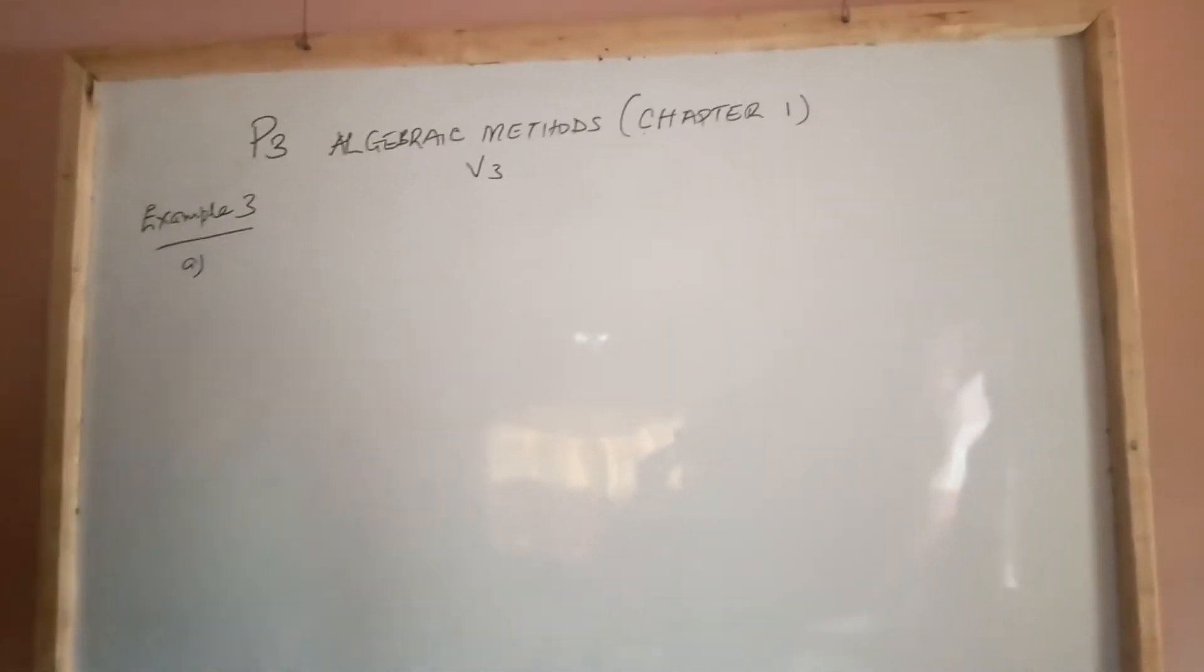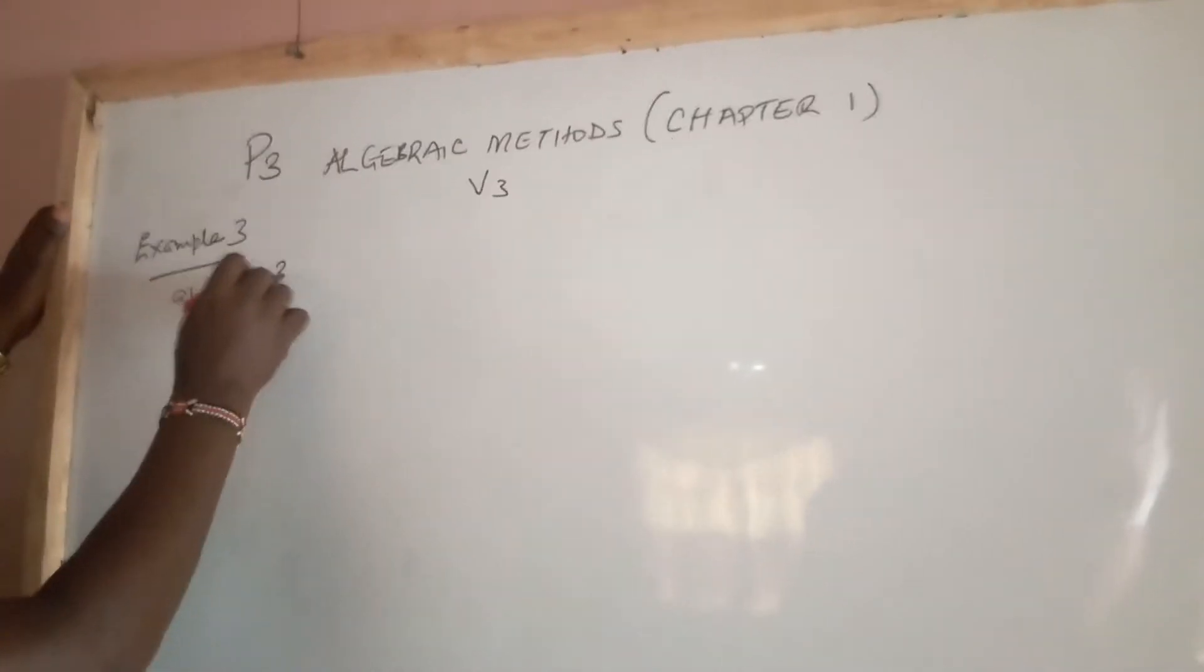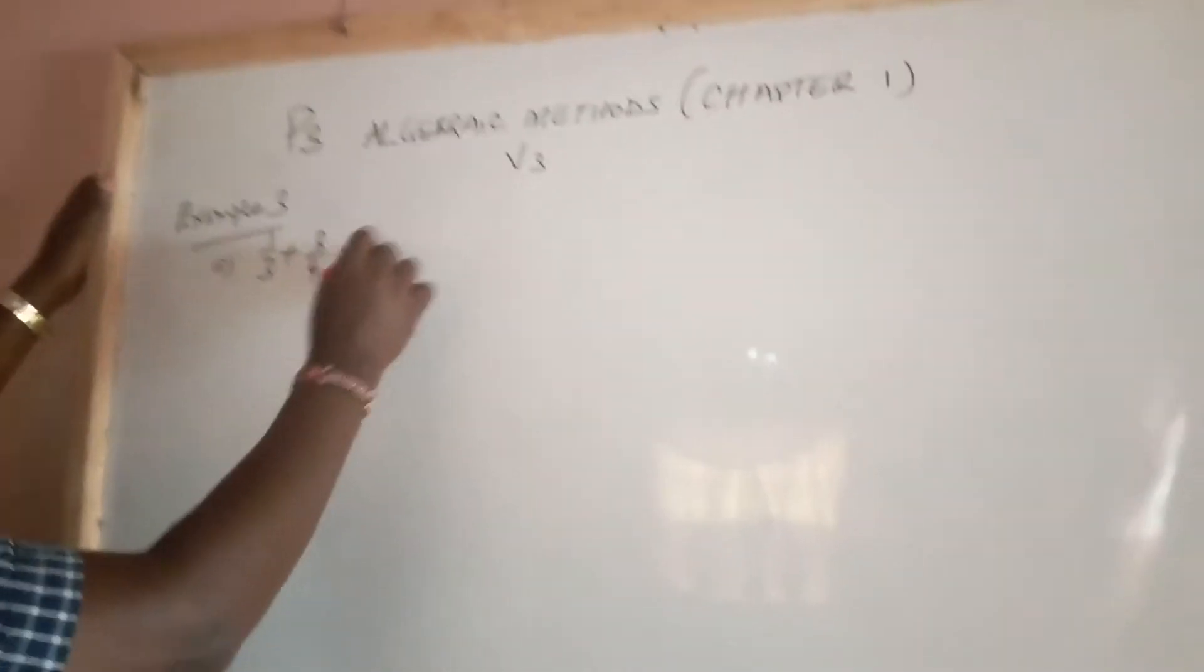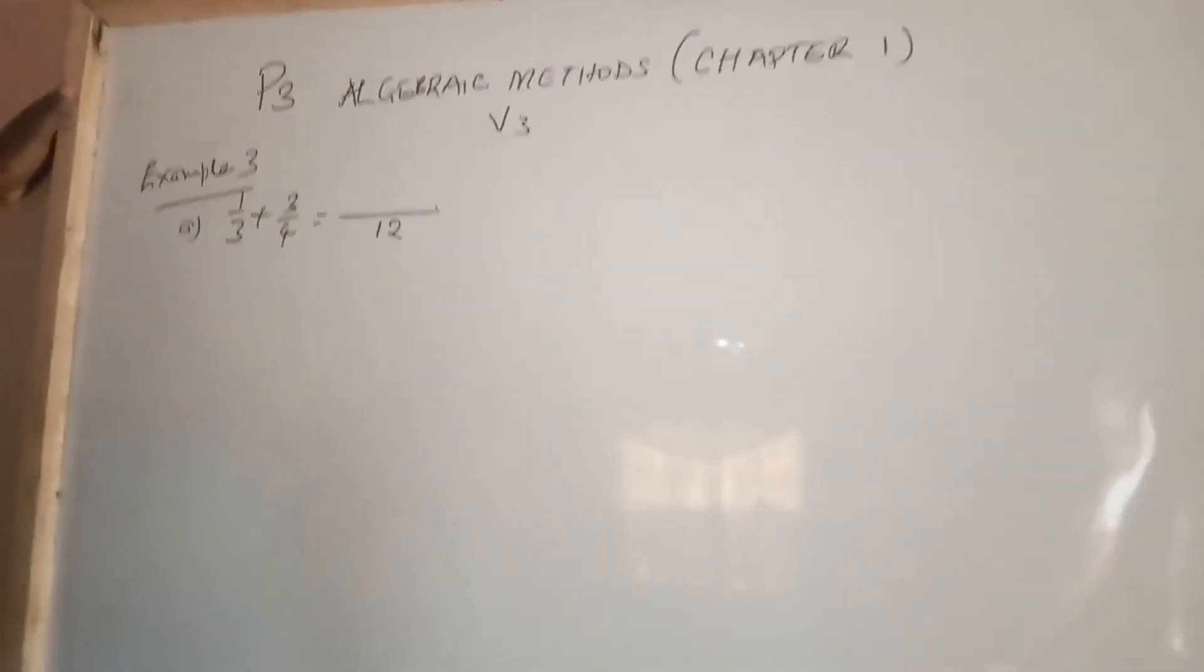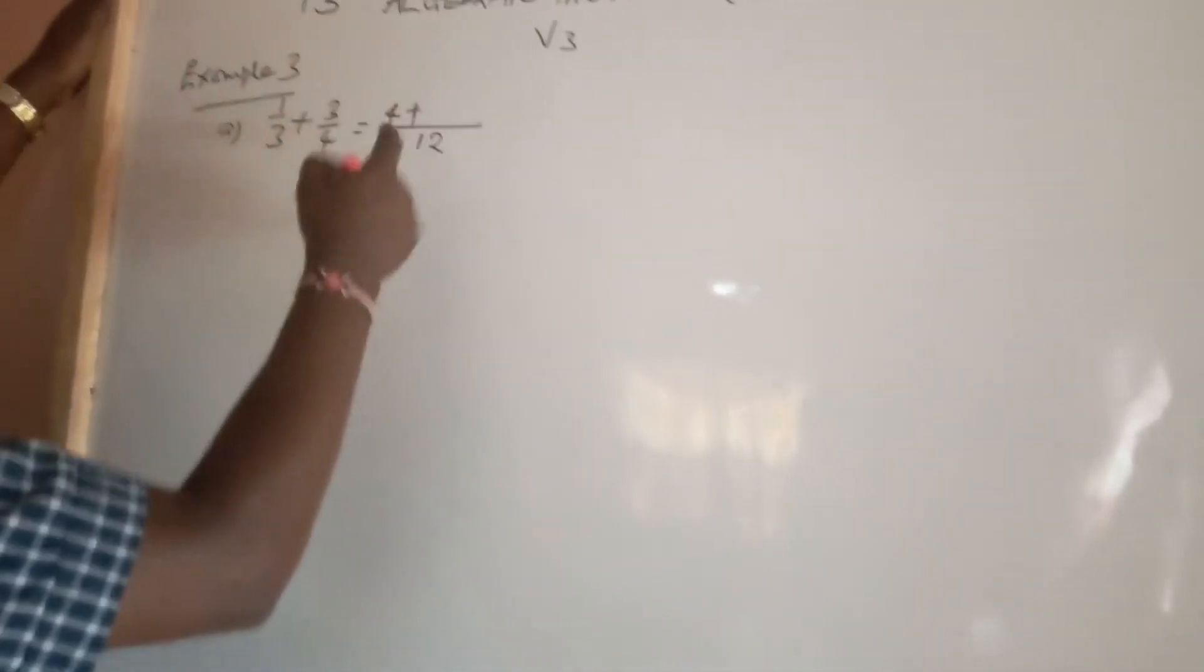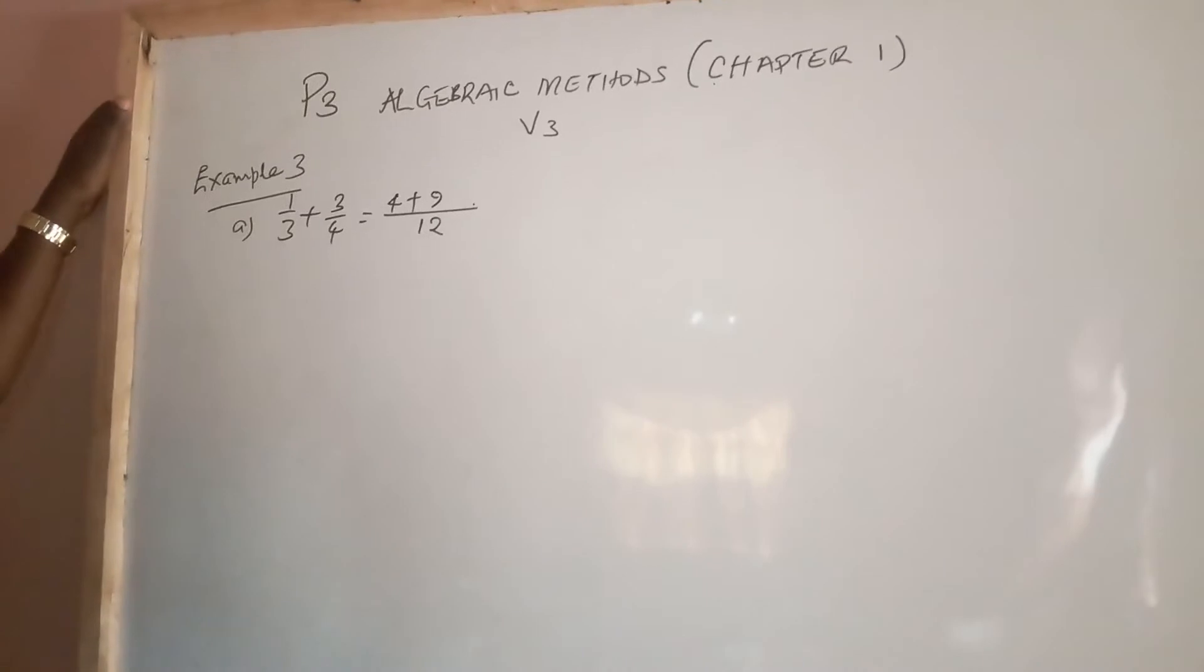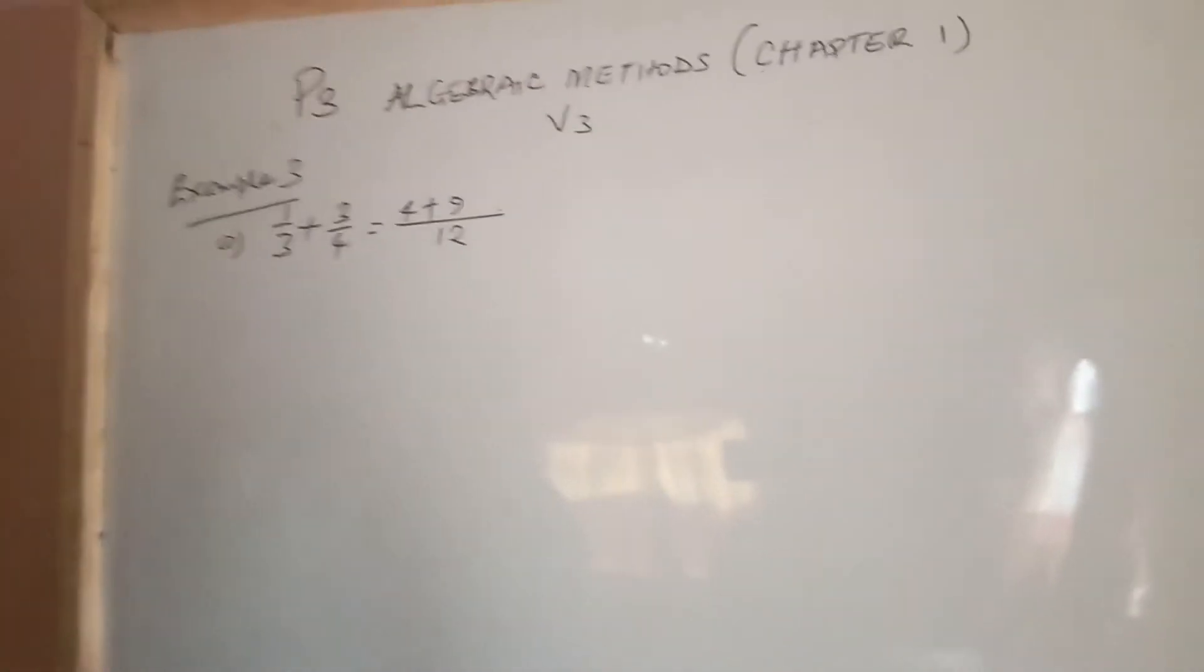In example 3 of algebraic methods, we have 1/3 plus 3/4. This is preliminary to what we've been knowing for some time. The LCM of the denominator is 12. 12 divided by 3 is 4, and 12 divided by 4 is 3. So we have 4 times 1 plus 3 times 3, which is 9.